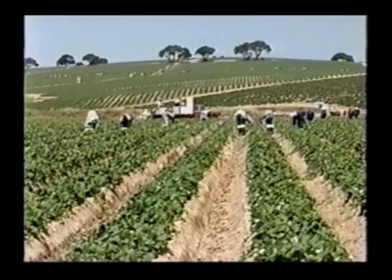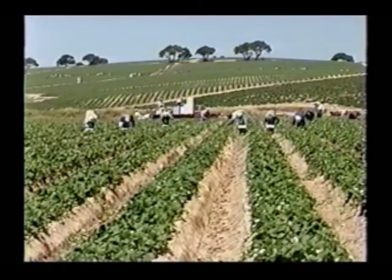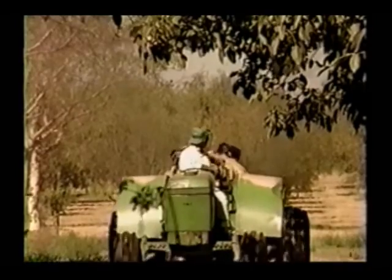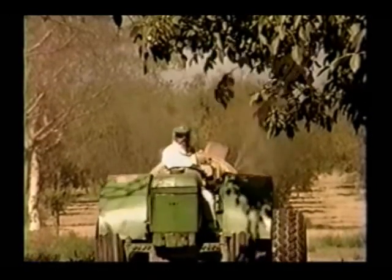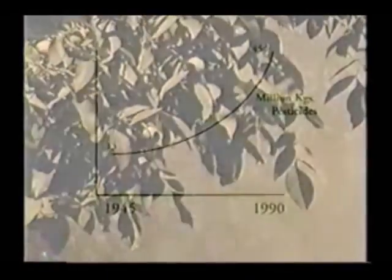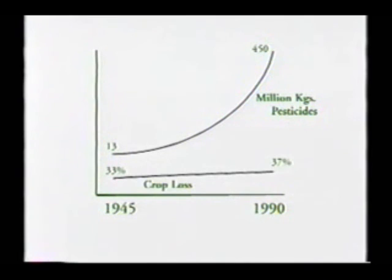One of the major ecological consequences associated with monocultures has been the intensification of pest problems. In response to pest population outbreaks, farmers have increased their use of pesticides, which in turn has led to the disappearance of beneficial insects and increased resistance of pests to pesticides. In the US, overall use of synthetic pesticides rose from around 13 million kilograms in the 1940s to around 450 million in 1990. Nevertheless, over a third of the crop is still lost to pests and diseases — the same level of damage as 50 years ago.